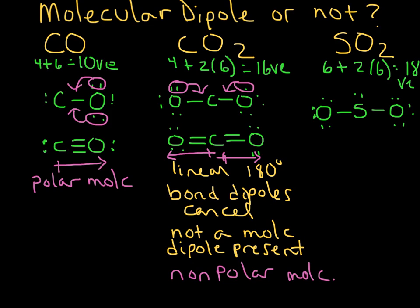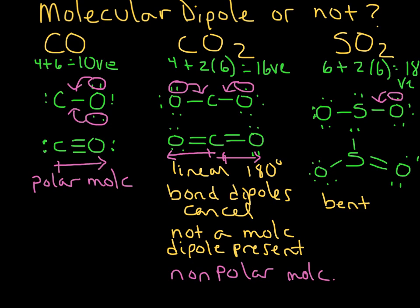Going ahead and drawing one of the resonance forms — because sulfur needs its octet — I'll rope that lone pair and redraw it showing geometry. The shape is bent, and the bond angle is less than 120 degrees, as discussed in a previous video.